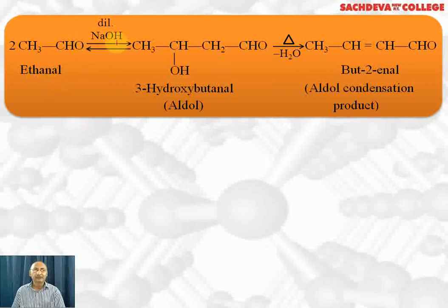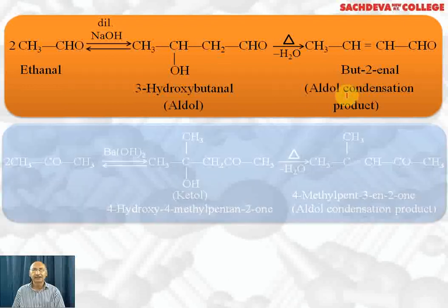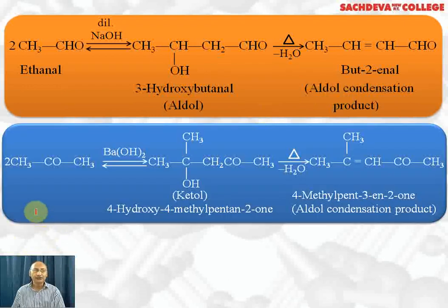Let's take a specific example: ethanal in the presence of dilute NaOH undergoes aldol condensation to form 3-hydroxybutanal. This is called aldol because both the OH group and aldehyde group are present. When heated, OH from one position and H from another are lost as water, a double bond is formed, and we get but-2-en-1-al — the aldol condensation product of acetaldehyde.